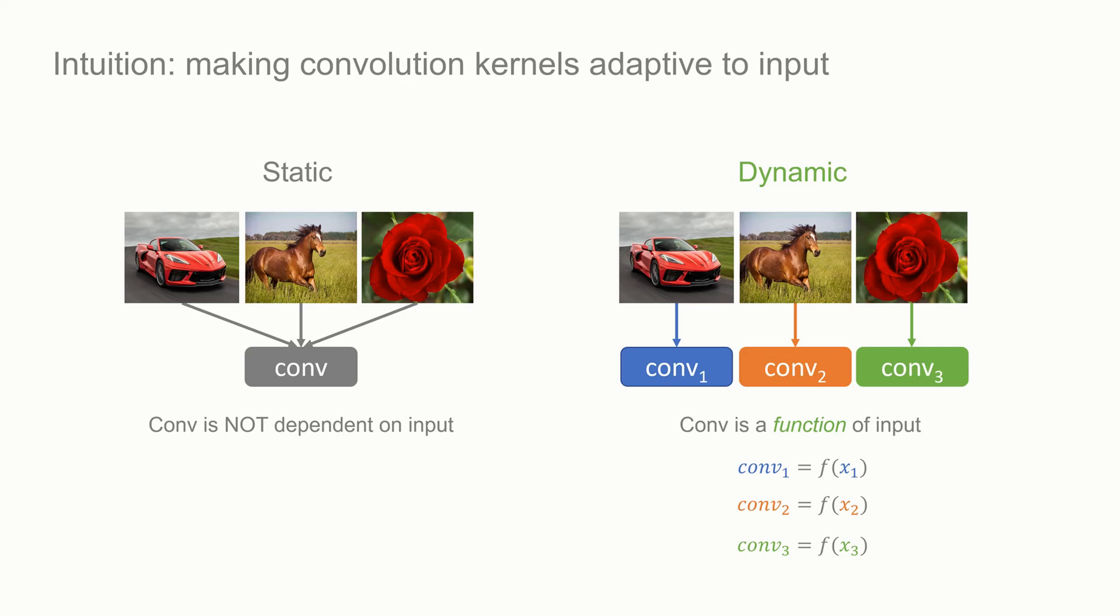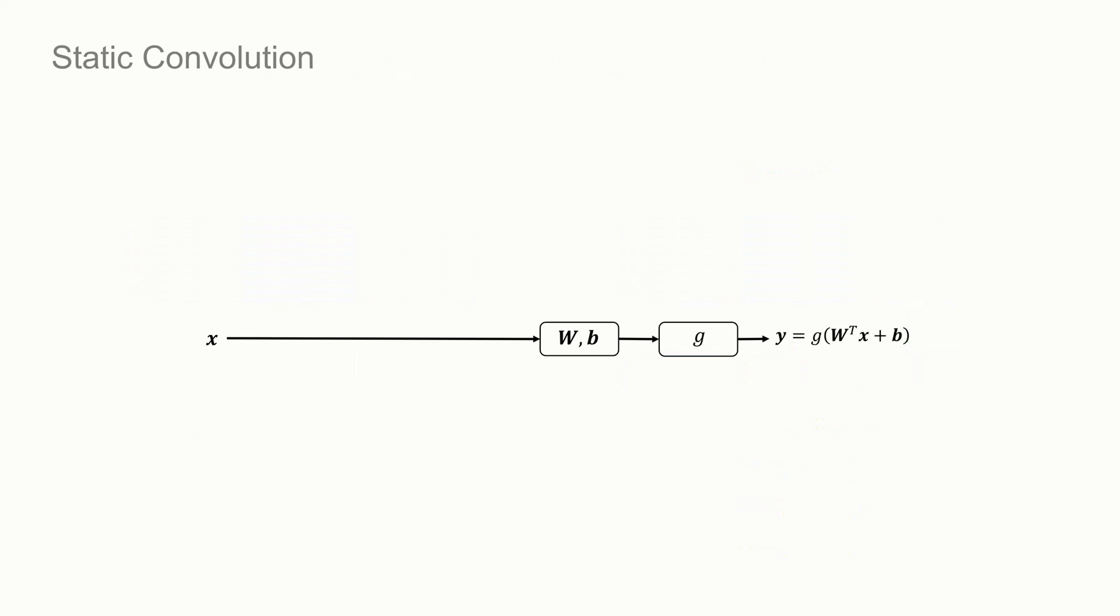Rather than increasing the network size, we adapt convolution kernels to the input. Specifically, the convolution kernel is a function of the input. Thus, different images are processed by their own proper convolution kernels. Compared to the static convolution, which has weight w and bias b,